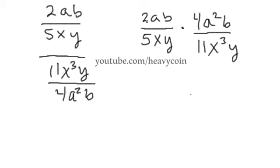So we got, let's see, 2 times 4 is 8, a times a squared is a cubed and b times b is going to be b squared and that's all over, let's see, so 5 times 11 is 55. We have x times x cubed is x to the 4th and y times y is y squared.